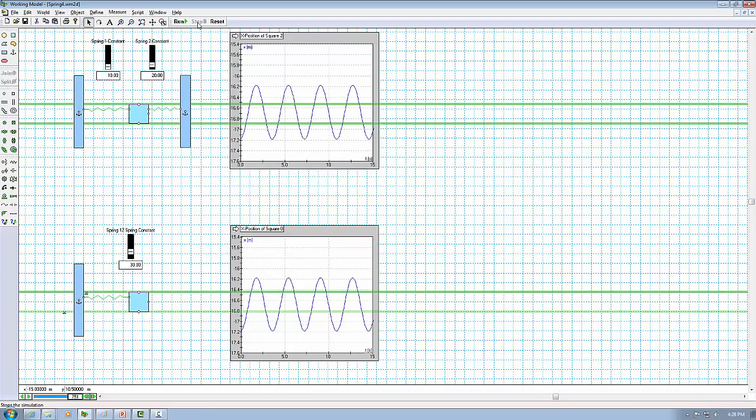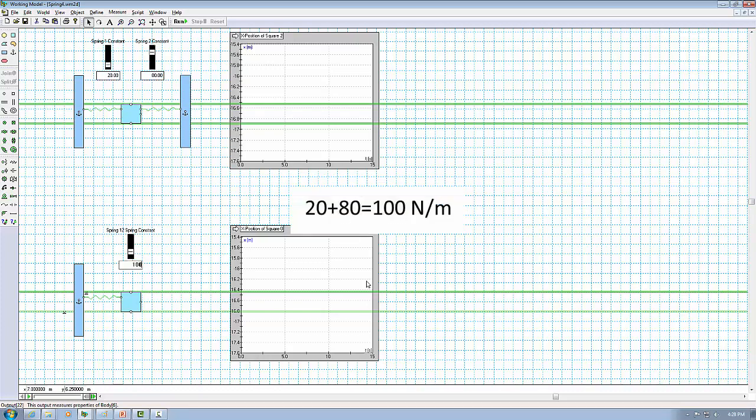Now let's try some other combinations of the two springs. Let's set k1 to be 20 newton per meter and k2 to be 80 newton per meter. So based on our calculation, the equivalent spring constant should be 100 newton per meter.